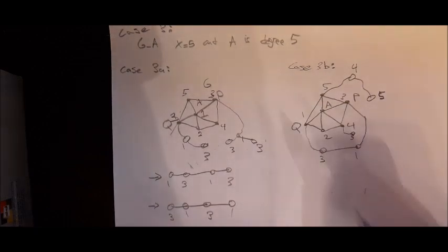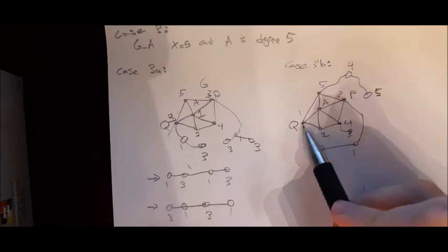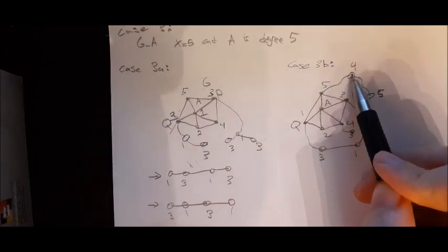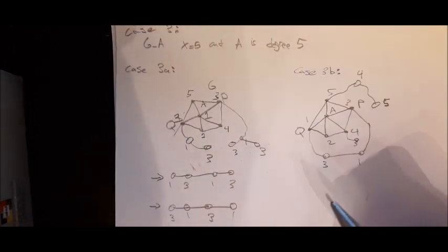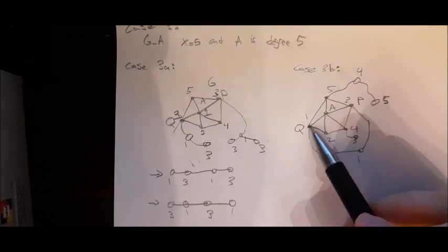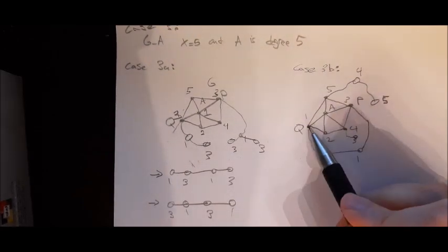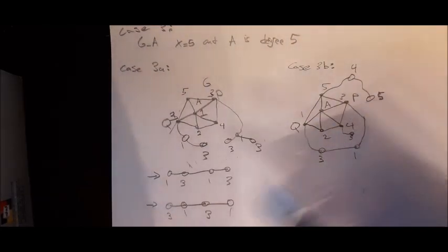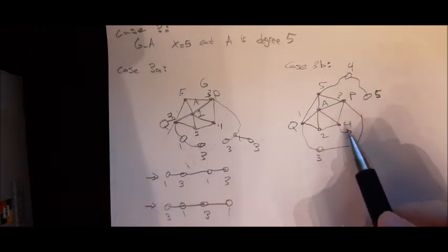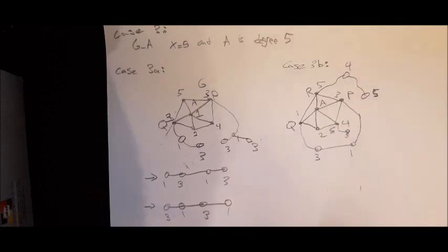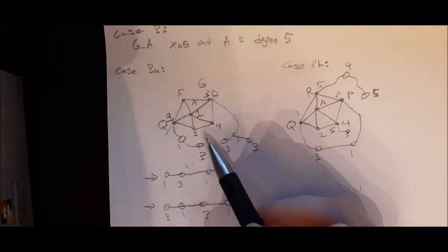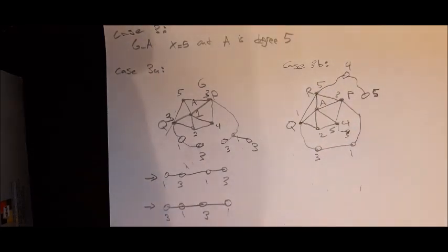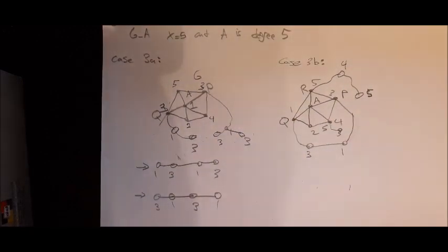Case four: P and Q are connected by a walk alternating between colors one and three. We now apply the same trick to two other neighbors of A — call them R and S — which are colored four and five respectively. The question is whether R and S are connected by a walk alternating between colors four and five.